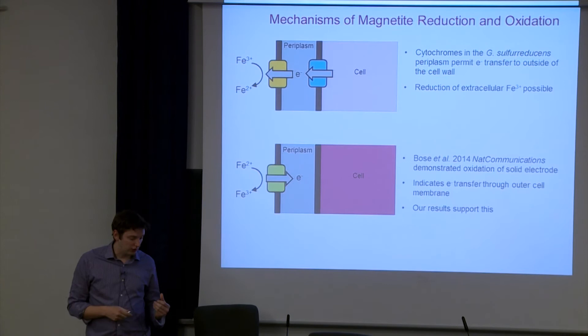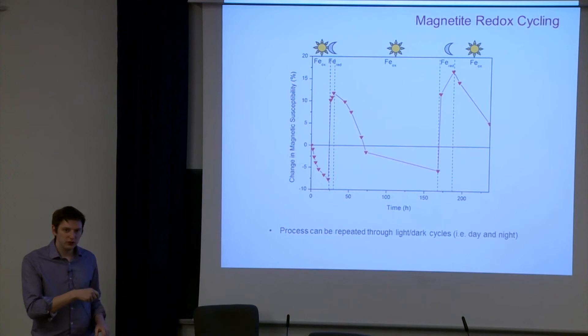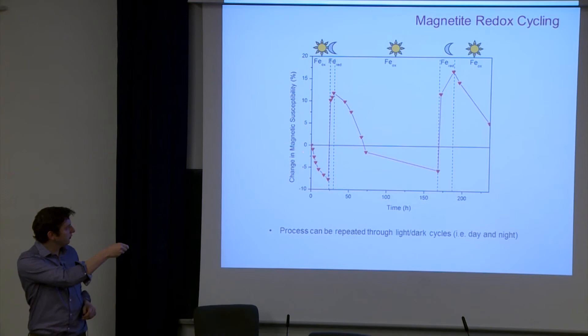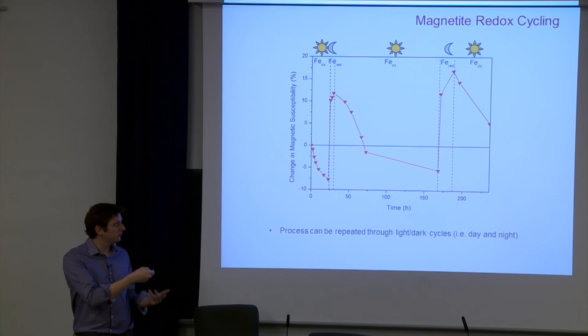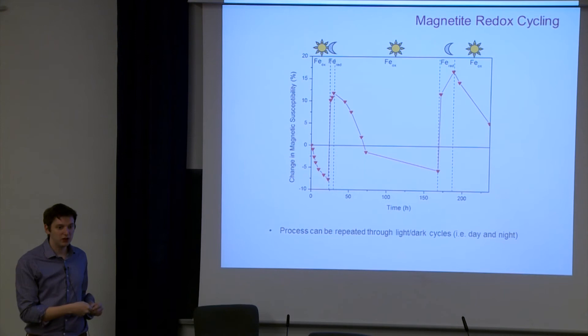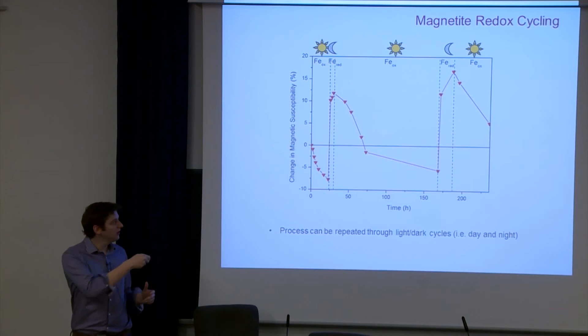Now just to quickly go back again to this idea of cycling. I mentioned before that we could put it in the light and back in the dark, and then back in the light again. What you can clearly see is that once we've oxidized our sample to begin with, we see a decrease in susceptibility, then we reduce it. We stimulate the Geobacter and we see this increase. When we put it back in the light, however, we see this decrease in the susceptibility again, and then we re-stimulate the Geobacter. We add a bit more acetate, put it back in the dark, and we see this reversal of the susceptibility again. So demonstrating this process could be cyclic between light and dark conditions, or more like day and night conditions.